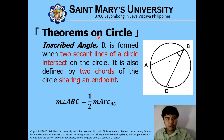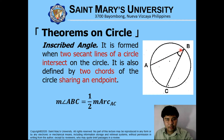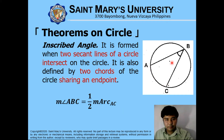For theorems on circles — an inscribed angle is formed when two secant lines of a circle intersect on the circle. It is also defined by two chords sharing an endpoint. The measurement of angle ABC is equivalent to one half the measurement of arc AC. So this angle is equivalent to one half of this arc length.